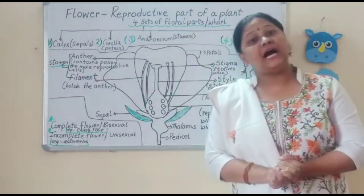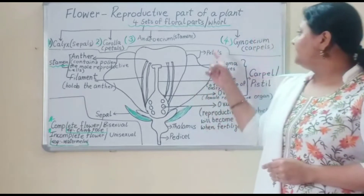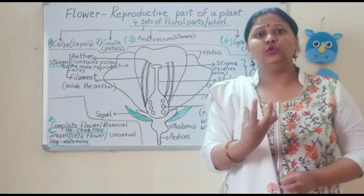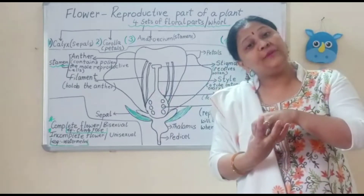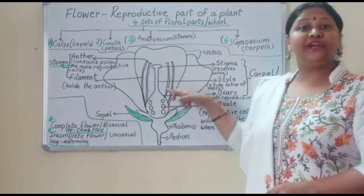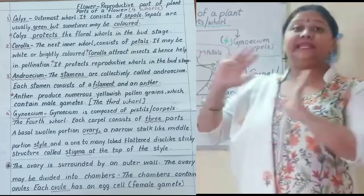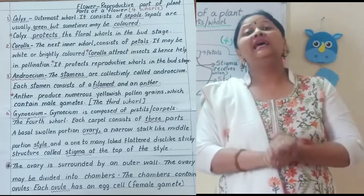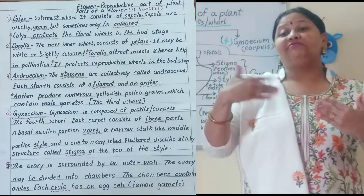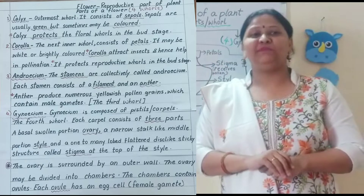Now coming to the fourth part, that is carpel. Carpel is also known as pistil — this is the female part. It contains the stigma, the style, and the ovary. Inside the ovary is present the ovule. Collection of these carpels or pistils is called gynoecium. To remember it: gynecologist is the female doctor for delivery of a child — gynecology, gynoecium — so this is the female part.